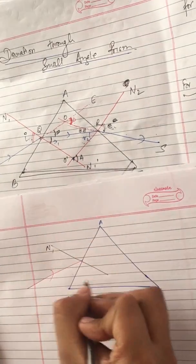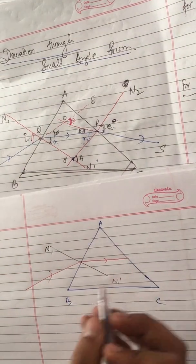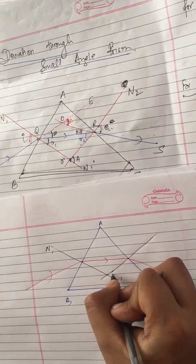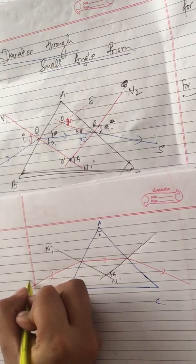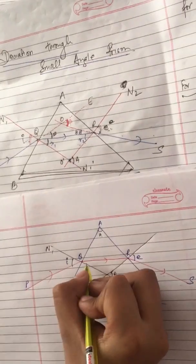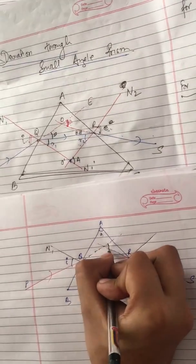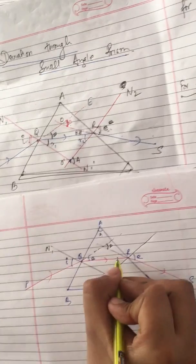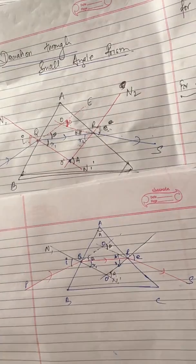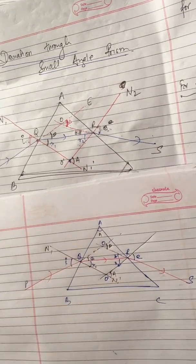We have a straight line drawn which is the normal line, normal to AB. We have lines N1 and N1-dash. The red line deviates and goes parallel to BC. This is your angle of deviation. We can see here angles: i minus O, e minus O, R1 minus O and R2 minus O, as seen in previous videos, and relationships A plus R1, E plus R2, R1 plus R2, and A plus D.